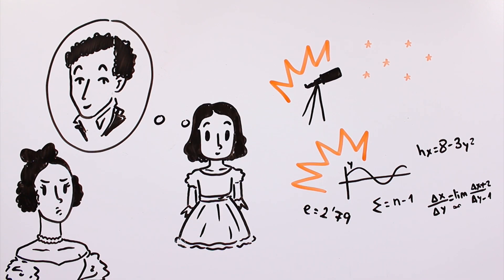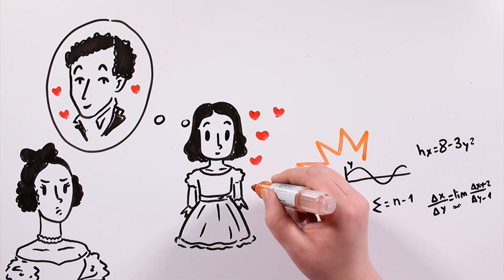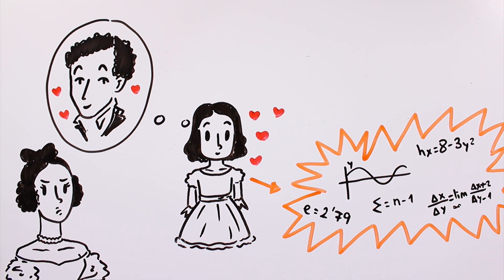Although, she couldn't prevent Ada from being fascinated by her father and from considering mathematics a poetic science.